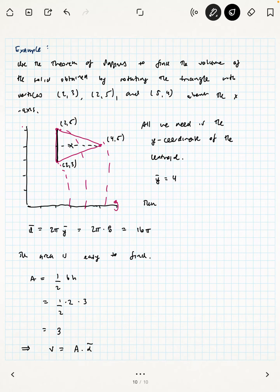All together we end up with the volume is area times distance traveled by the centroid. I'm sorry, that's not an 8. I'm so sorry. That's supposed to be—I got ahead of myself. It's supposed to be a 4. That means 8π.